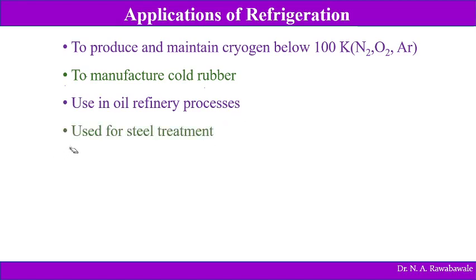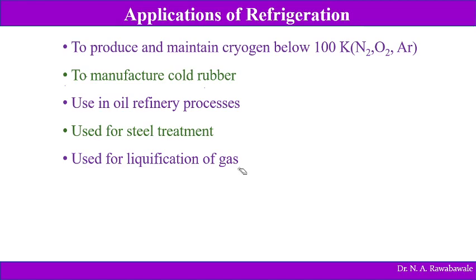Refrigeration is used for steel treatment — heat treatment processes are carried out at various temperatures, causing the molecular structure of steel to change, and accordingly the properties of steel also change. Refrigeration is used for liquefaction of gases — at lower temperatures, gas gets condensed and can be handled very easily. For example, LPG (Liquefied Petroleum Gas) is first liquefied, then fitted into tanks — that is nothing but liquefaction of gas.